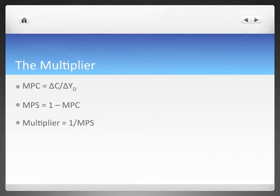Alright, the multiplier. Just to refresh our memories on our equations, because we're going to use them quite a bit in this video. MPC is equal to the change in consumption over the change in disposable income. MPS equals 1 minus MPC, and the multiplier equals 1 over the MPS.